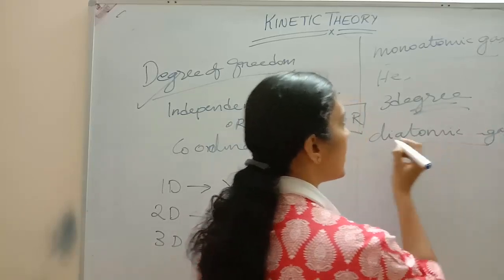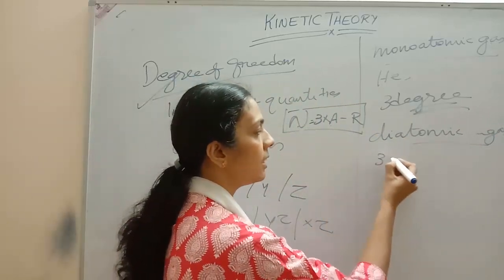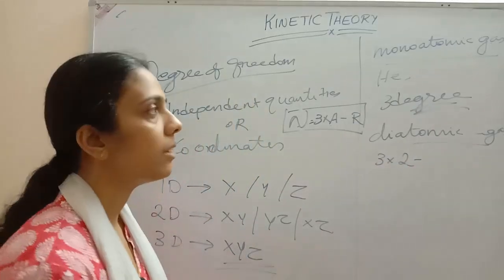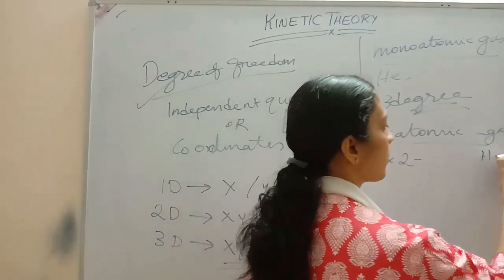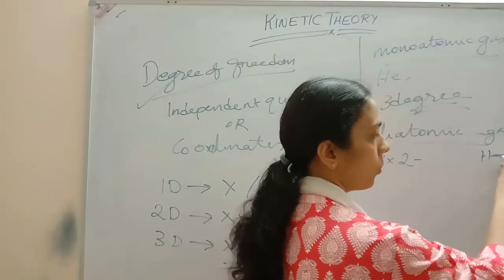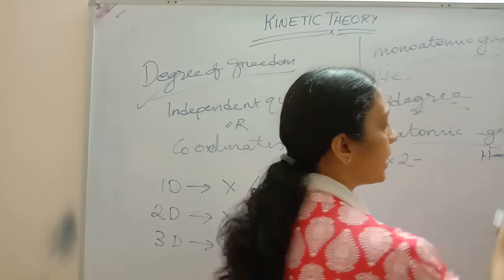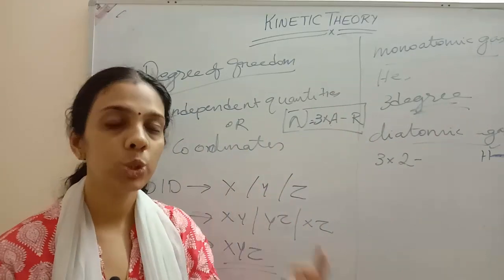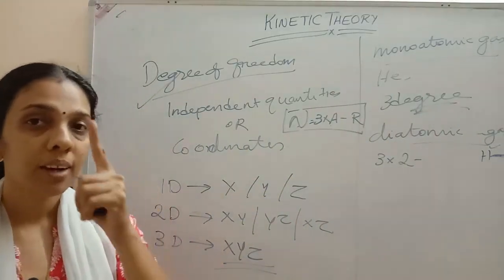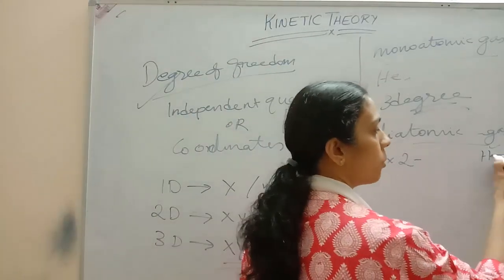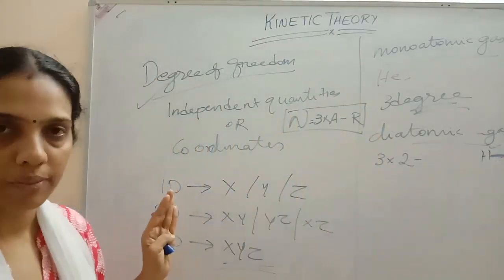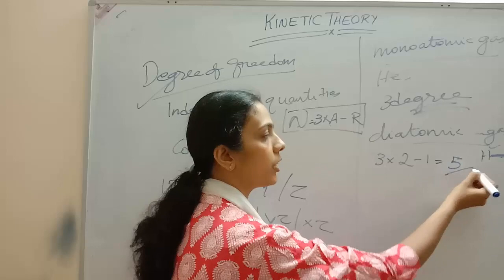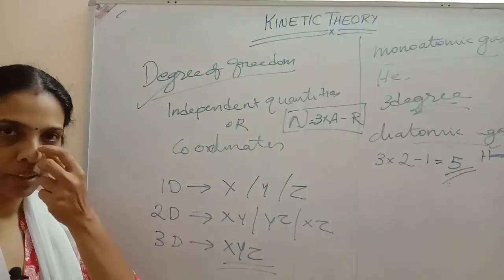For a diatomic gas, consider hydrogen. It has two atoms, so 3×2 = 6 potential degrees of freedom. However, there is one restriction: the bond between the two hydrogen atoms — they can't come closer or move apart. So the number of degrees of freedom will be five.